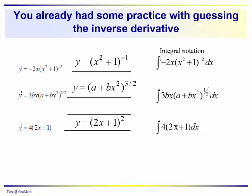Using the integral notation, we identify this process by an elongated S. We put the term that we're trying to figure out — what it was that we had to differentiate in order to get this — following this symbol. Remember, this is our integrand, and it's being integrated over the independent variable dx. So likewise with this function, it's sandwiched between the integral sign and the dx, and this is what we have to figure out — what it was that we differentiated in order to get this.